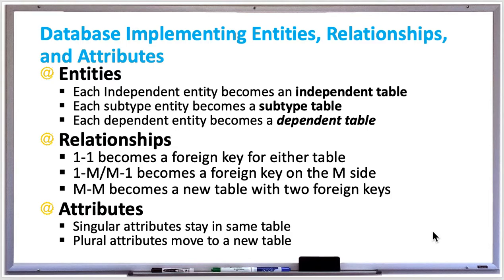Many-to-many relationships become a new table that contains two foreign keys referring to the primary keys of each related table.